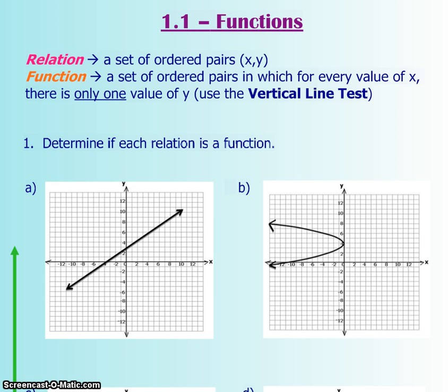Now under the big umbrella relation are functions and non-functions. A function is a set of ordered pairs, but if you have an x value, you can only have one y value. If you have more than one y value, then it's not a function anymore. An easy way to tell is using the vertical line test.